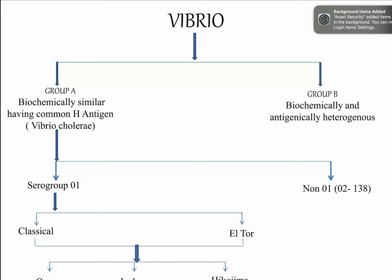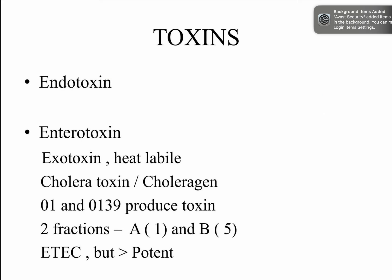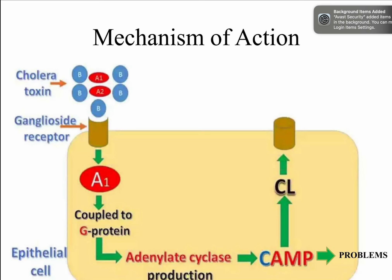There are different groups of Vibrio: Group A and Group B. Group A strains are biochemically similar, having a common H antigen, while Group B strains are biochemically and antigenically heterogeneous. Vibrio cholerae belongs to Group A. Vibrio cholerae possesses somatic O antigen and flagellar H antigen, and is classified under the Gardner and Venkatraman system with 139 O serotypes.